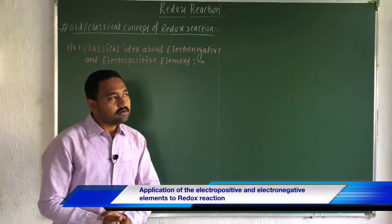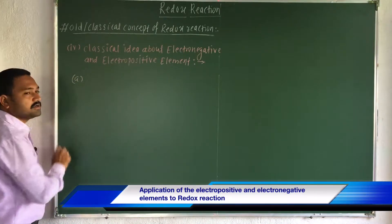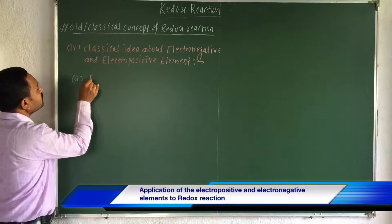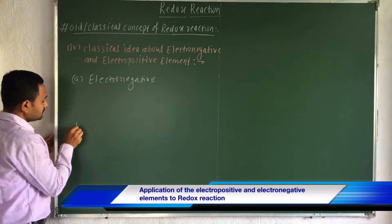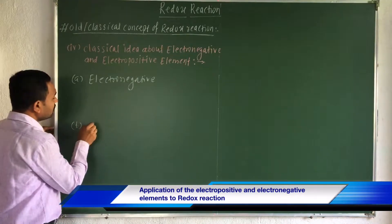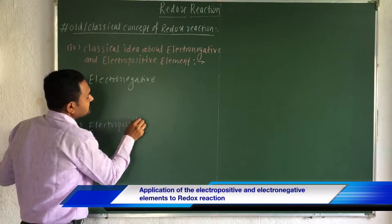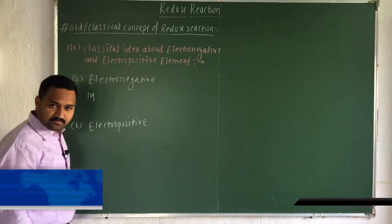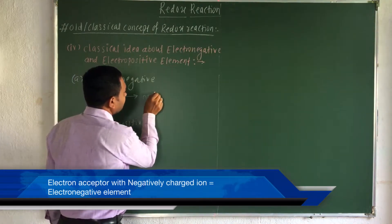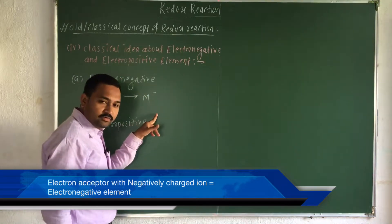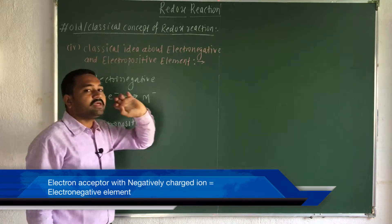Now let us simply discuss what is an electronegative element and what is an electropositive element. In the periodic table, there are several elements which show either electronegative or electropositive nature. If we consider the term electronegative: any atom which accepts an electron and converts into an M⁻ ion — that atom converts into an ion with a negative charge — that particular element is known as an electronegative element.